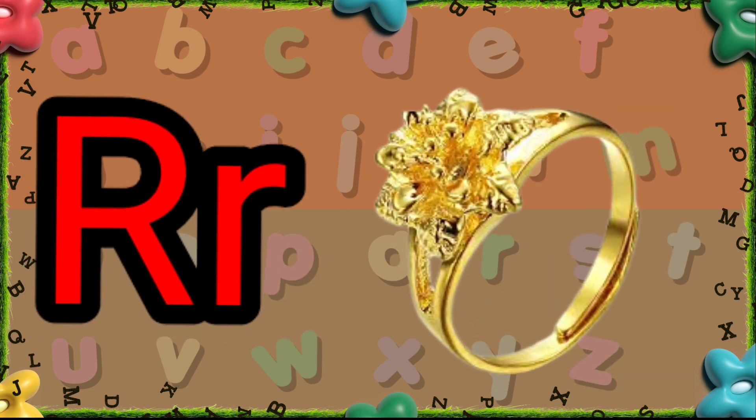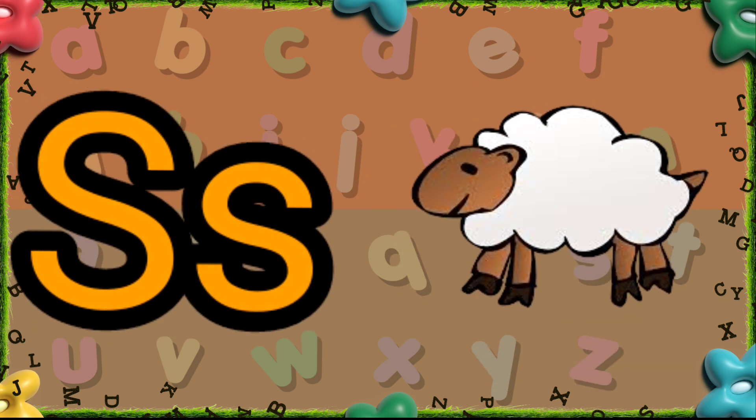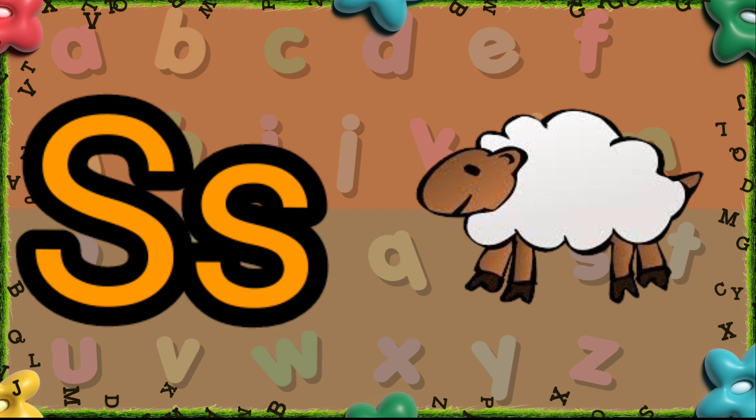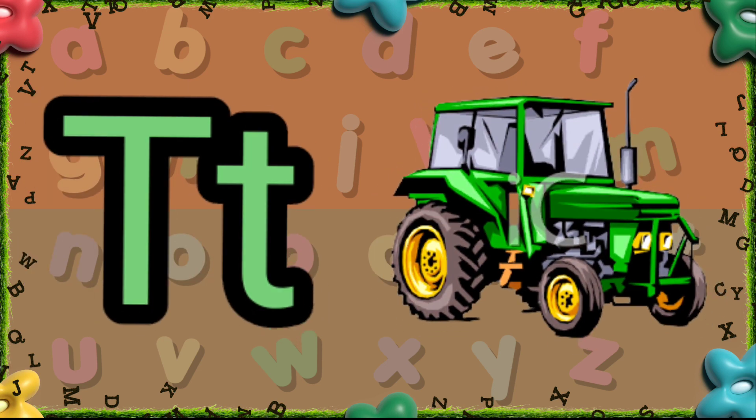R is for Ring. S is for Sheep. T is for Tractor.